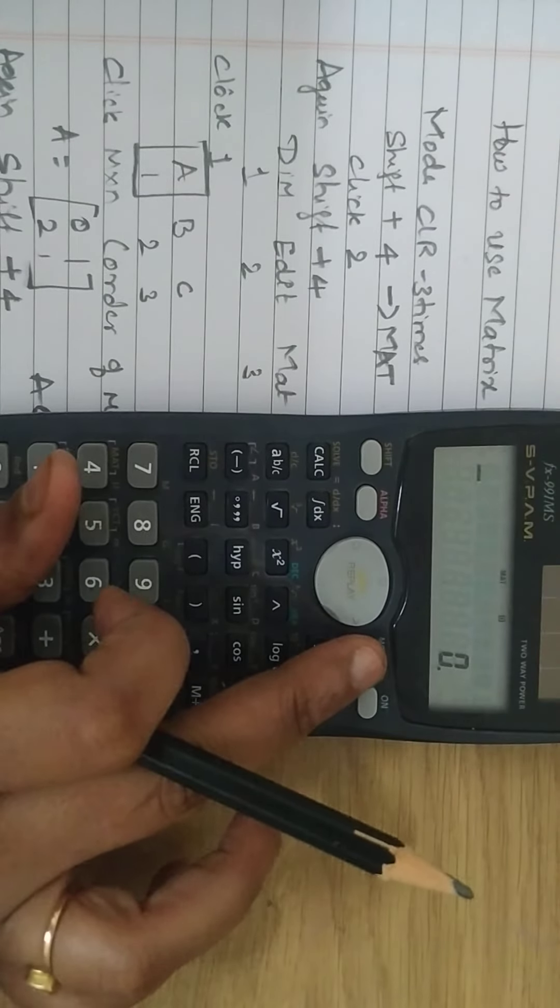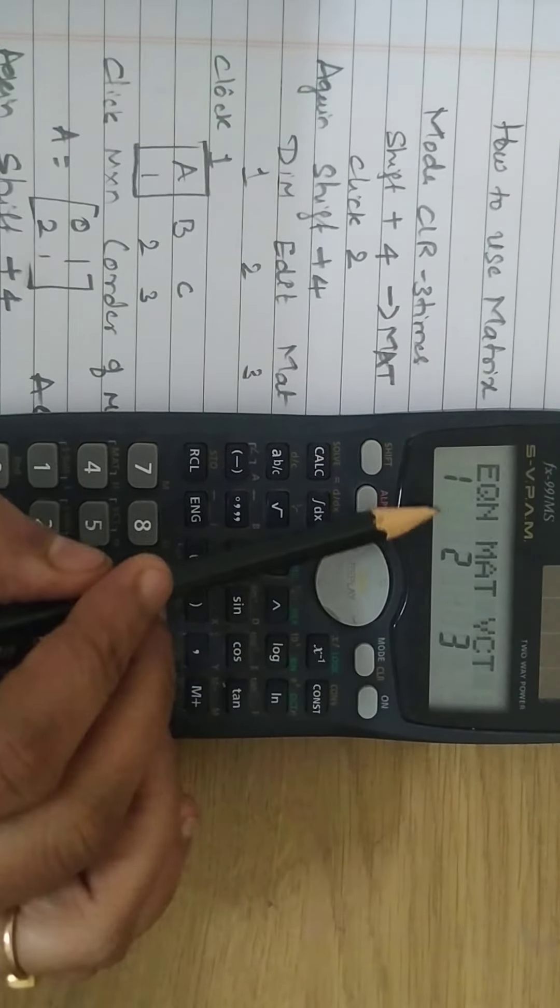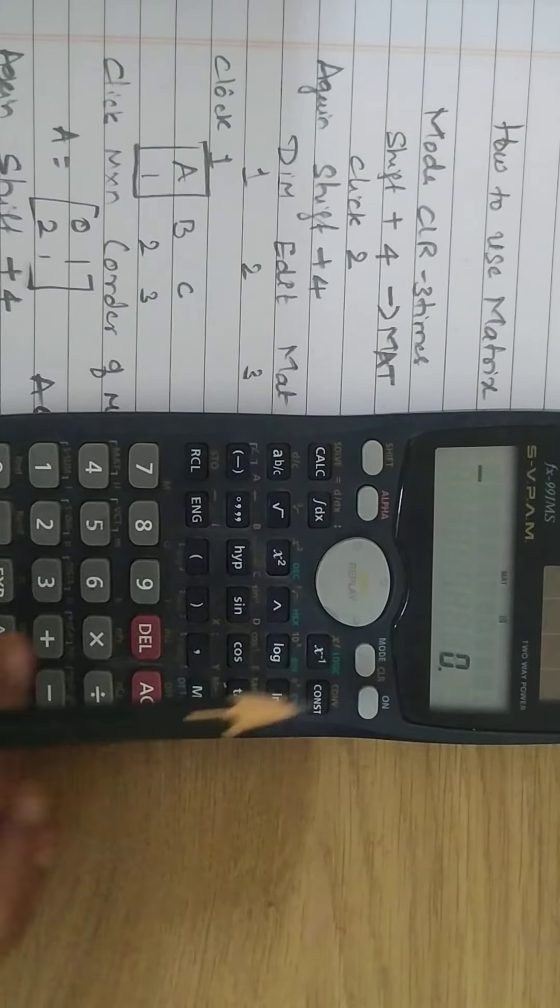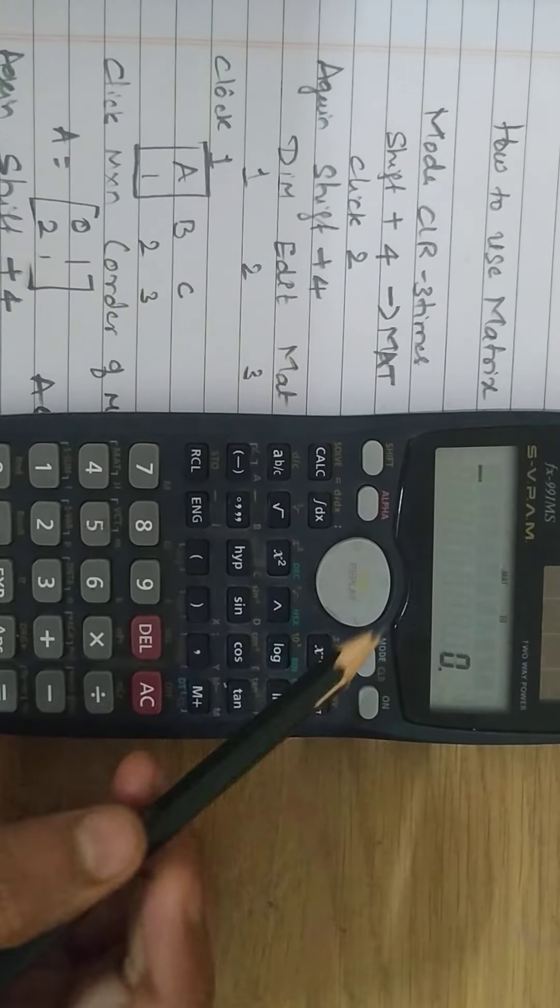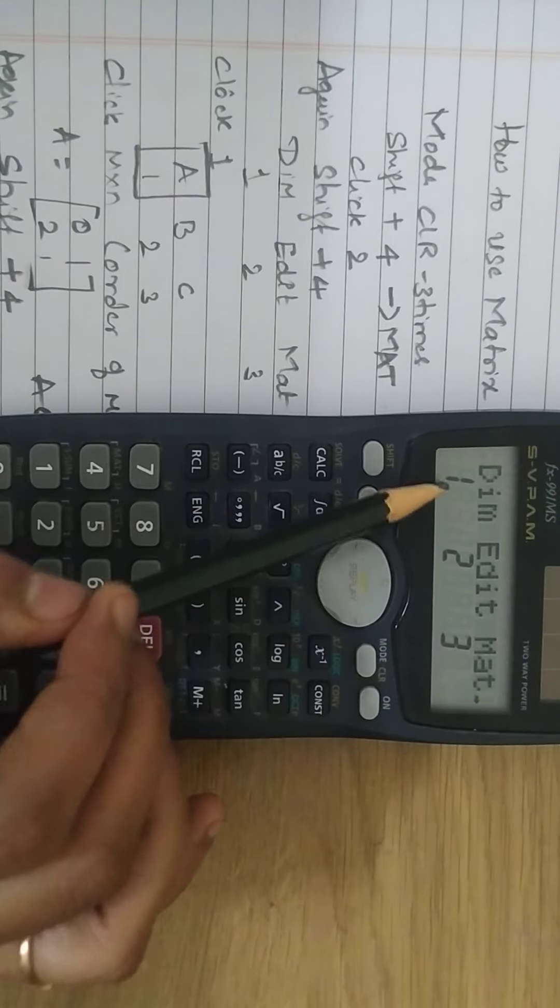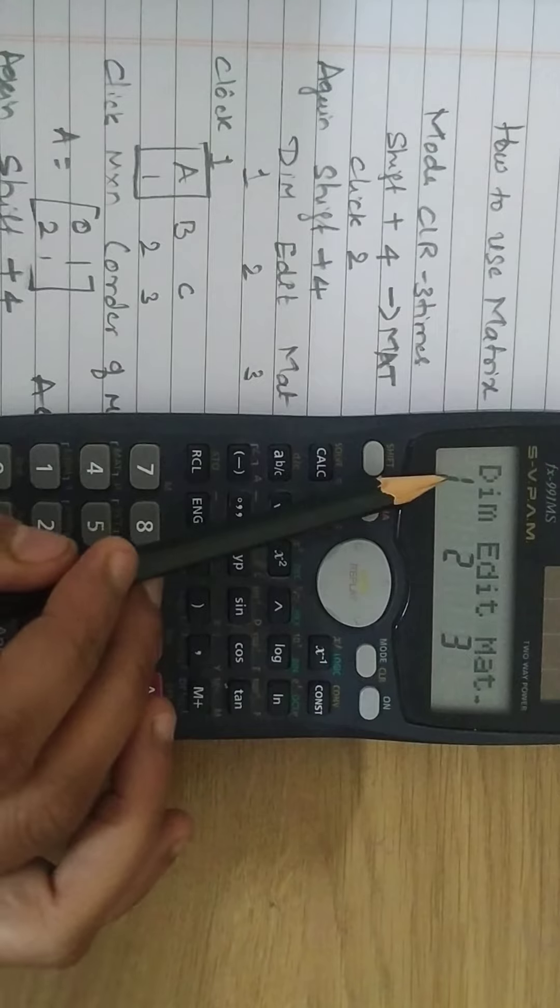First, press mode CLR three times. Then press math function number 2 to operate math function. Press shift 4 for dimension edit and math.